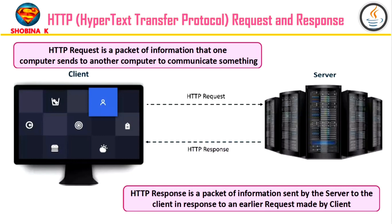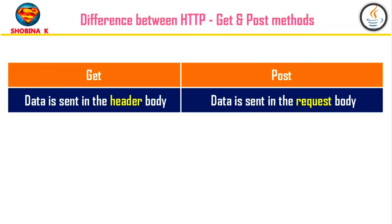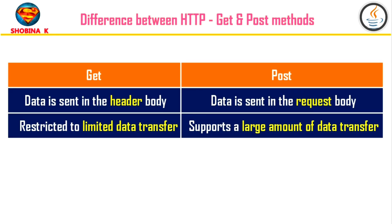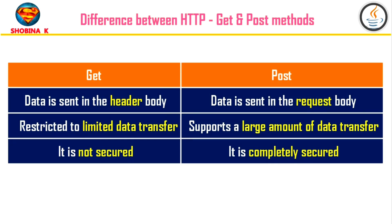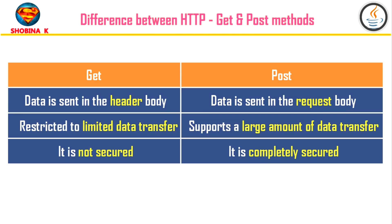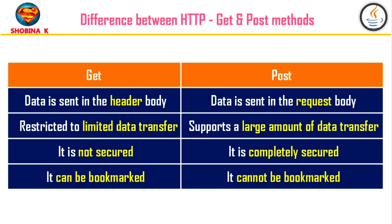Now let's understand the difference between GET and POST methods. In GET, data is sent in the header to the server, while in POST it is sent in the request body. GET can send only a limited amount of data, but POST can send large amounts. GET is not secured because data is exposed in the URL, but POST is secured because data is not exposed. GET requests can be bookmarked and are more efficient, whereas POST requests cannot be bookmarked. These are the key differences between HTTP GET and POST methods.